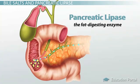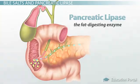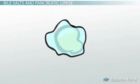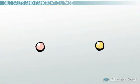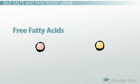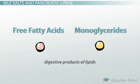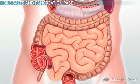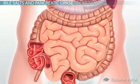The enzymes of the small intestine are responsible for almost all of the fat digestion. When pancreatic lipase acts on the lipid, it breaks it down, which results in free fatty acids and monoglycerides — the two digestive products of lipids. These products are much easier for your small intestine to handle, and they have very little trouble being absorbed out of your digestive tract.